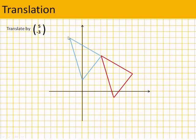So from where it was, each point goes 1, 2, 3, 4, 5 across, and 1, 2, 3 down. Like so.